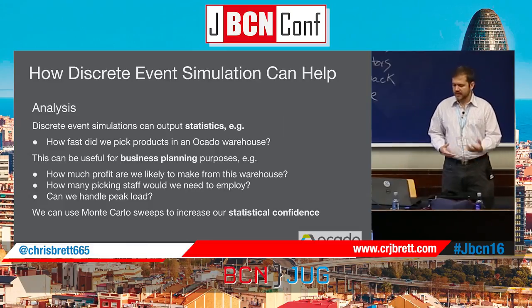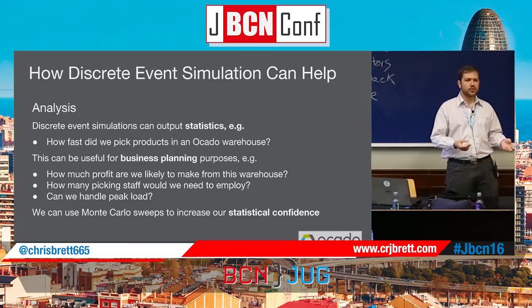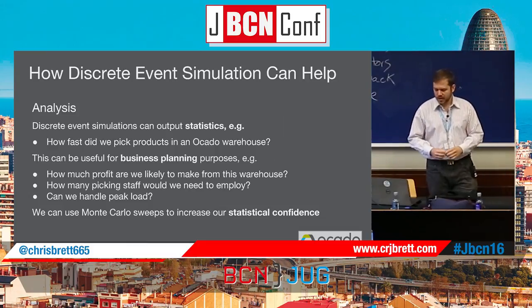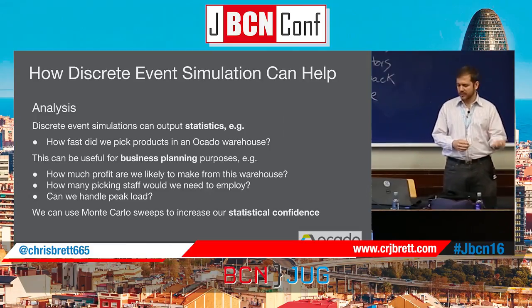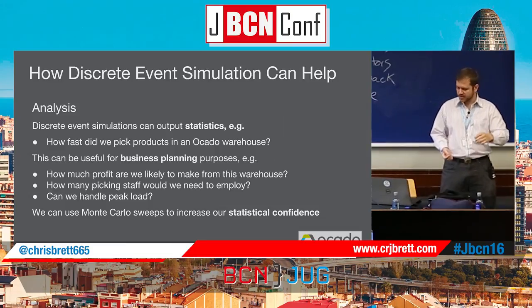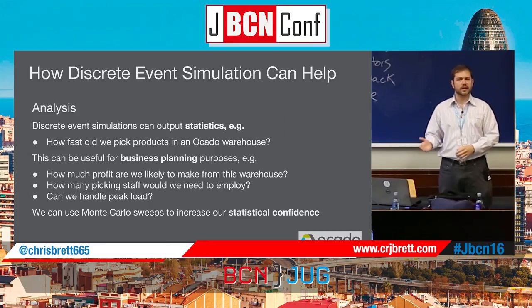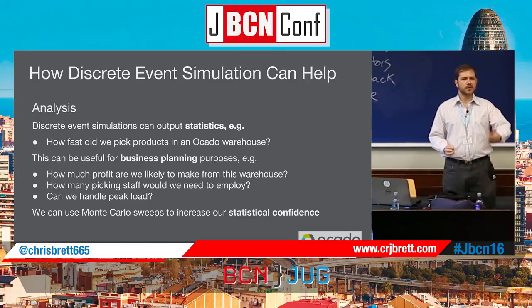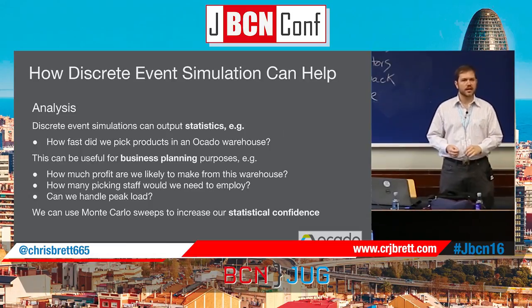For analysis, our discrete event simulations can output statistics about how our system is performing — for the warehouse example, that might be how fast we pick products or the rate of conveyor flow. We can use these statistics for business planning: telling the business that running the system with these inputs will give this throughput, meaning this profit or this many picking staff needed, and how much peak load we can handle. We can also use Monte Carlo sweeps — running the same experiment over and over with different random seeds — to calculate mean throughputs, standard deviation, and measure reliability.